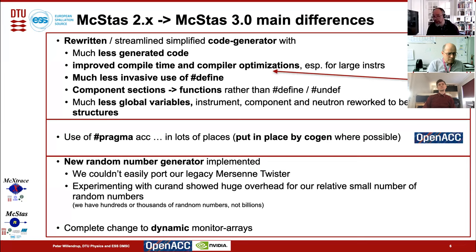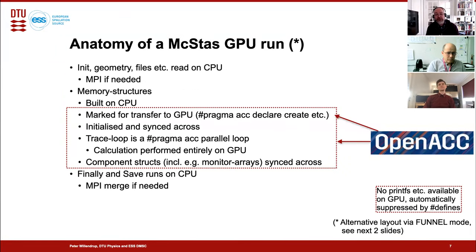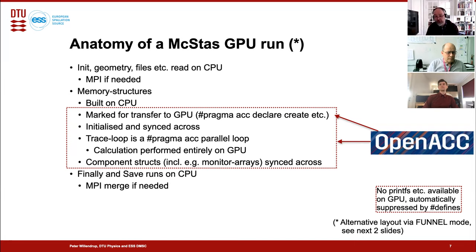All monitors are now dynamic arrays. The anatomy of a GPU run: files and geometry are treated exactly as in historical McStas — handled on CPU, parallelized with MPI if needed, memory structures built on CPU. All the way through initialize runs on CPU. The last bit of initialize transfers memory structures to the GPU. Then the full trace loop runs on the GPU — nothing really happens on CPU there other than bookkeeping synchronized with the GPU. At the start of finally, we retrieve structures from the GPU — monitor arrays etc. — and then do finally and save on CPU.